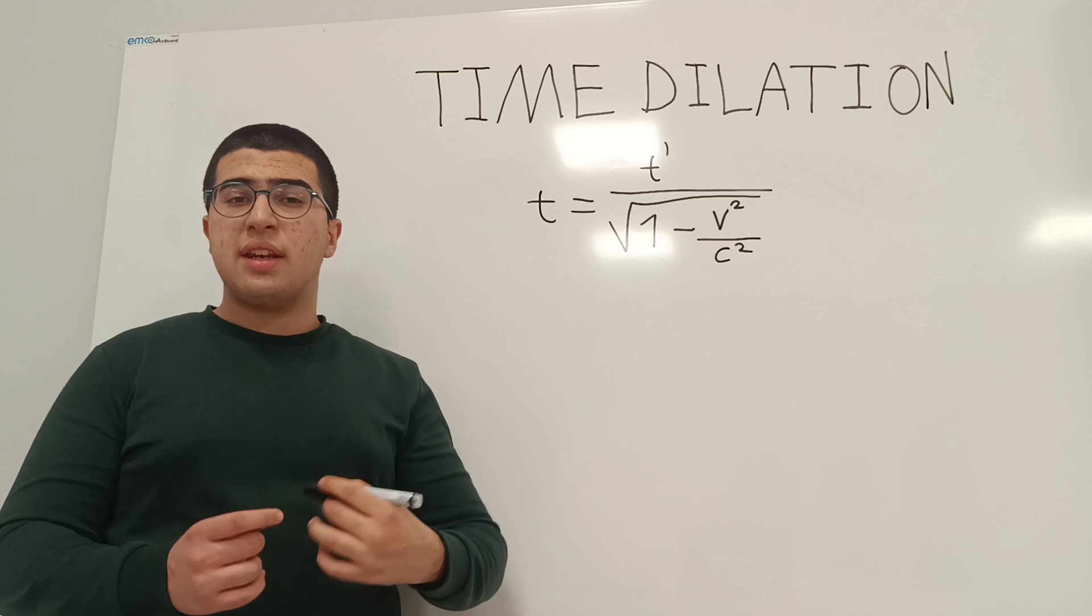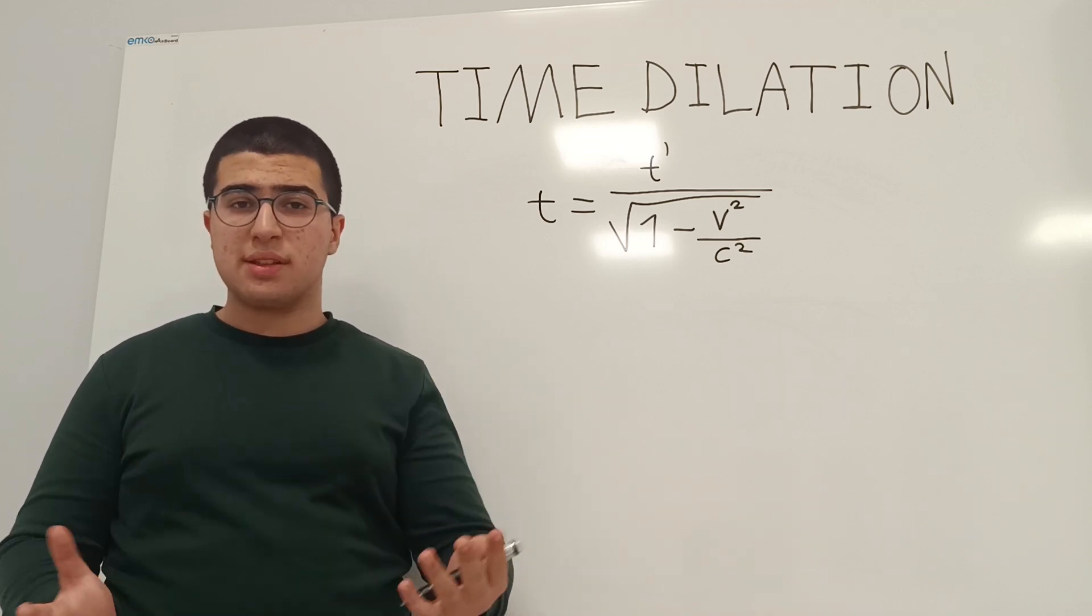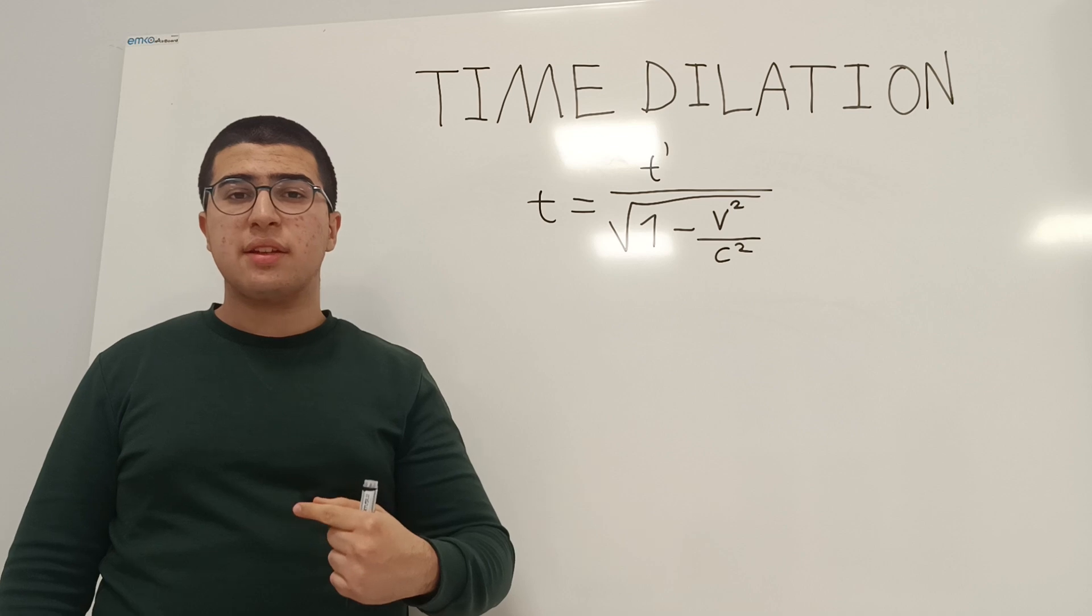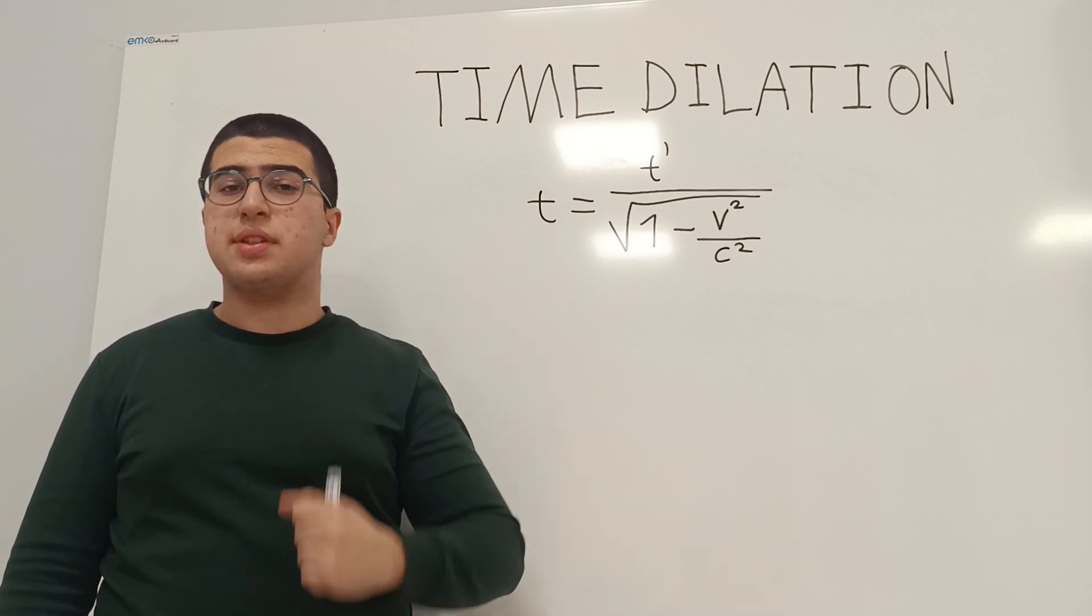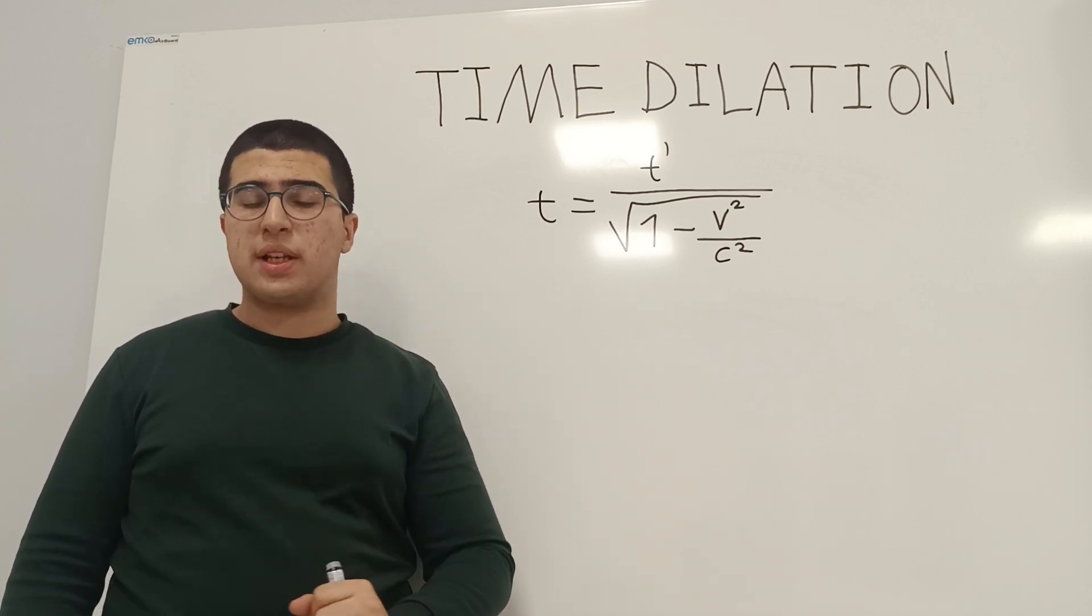For you, when 10 years have passed, you'll be 26 years old, and then your friend comes back and you'll see that your friend is just 17 years old, so only one year passed for your friend.